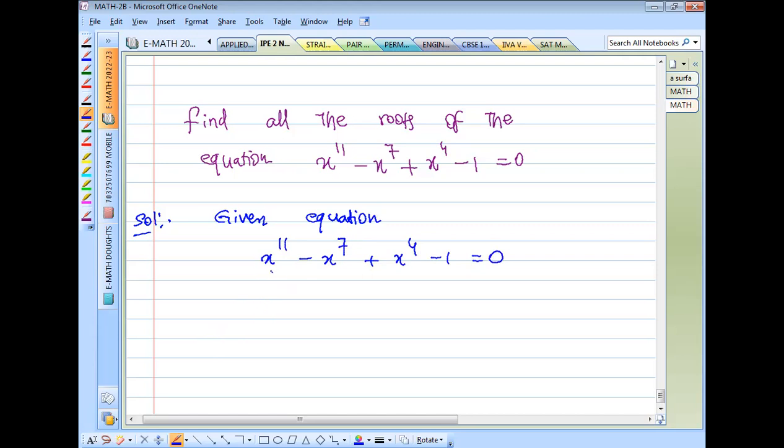From the first two terms we take x power 7 common. From the remaining two terms we take 1 common. So we get x power 7 times the quantity x power 4 minus 1, plus 1 times the quantity x power 4 minus 1.